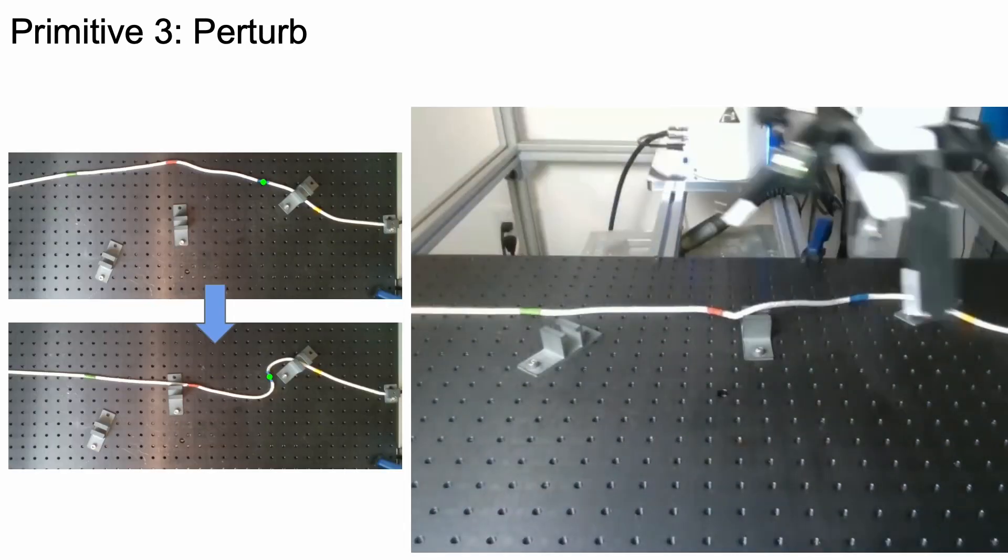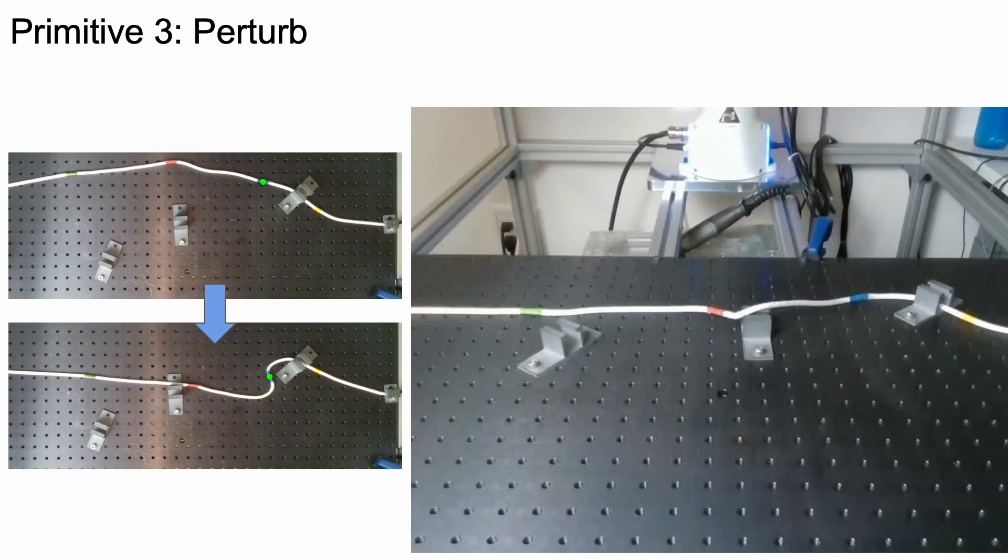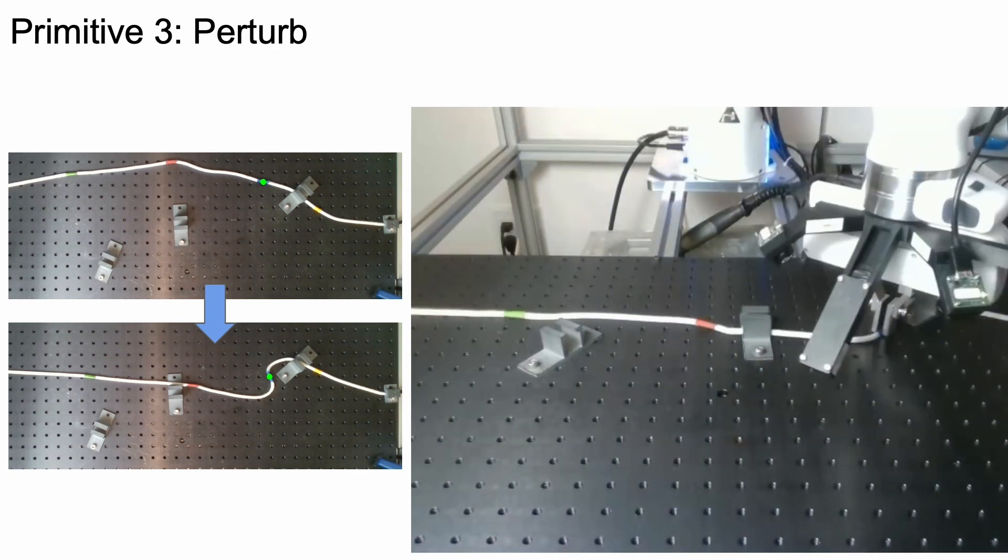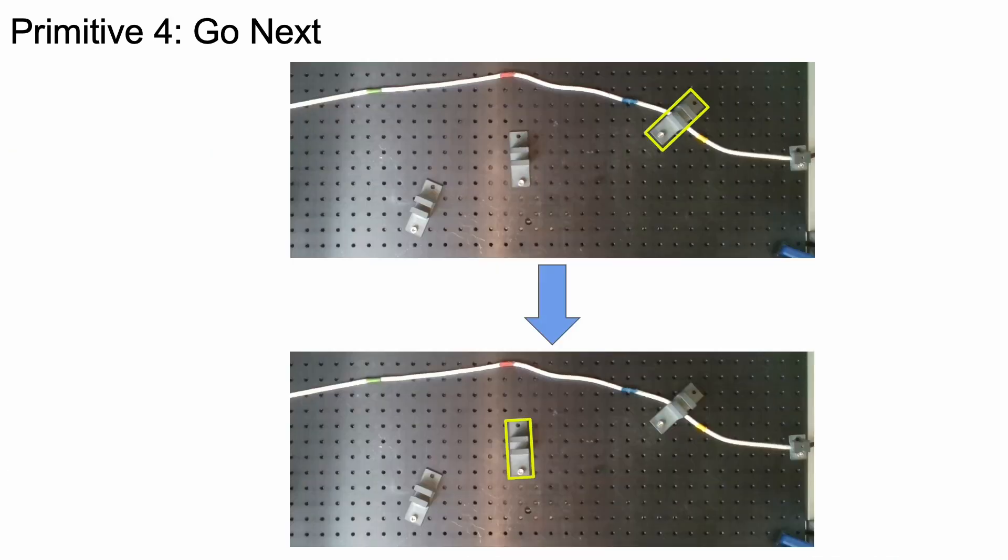Perturb also uses a top camera to grasp the cable and change its shape so it becomes easier to route. The go-next primitive transitions our high-level policy to the next clip once the previous has been routed.